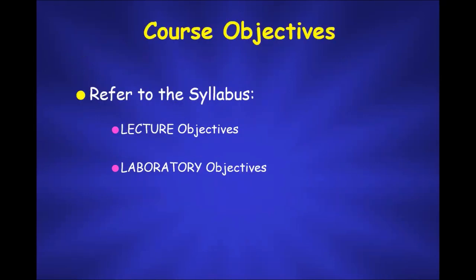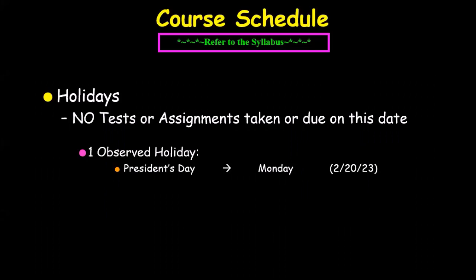The course objectives are pretty straightforward — just read them on your own; you'll see them in the syllabus. As for the course schedule, on page 17 it's all color-coded. It's like the course calendar but all on one page, though the full calendar has much more detail about when things open and close. We really only have one holiday observed, which is President's Day on February 20th. I arranged it so you won't have any tests or assignments due on that date.